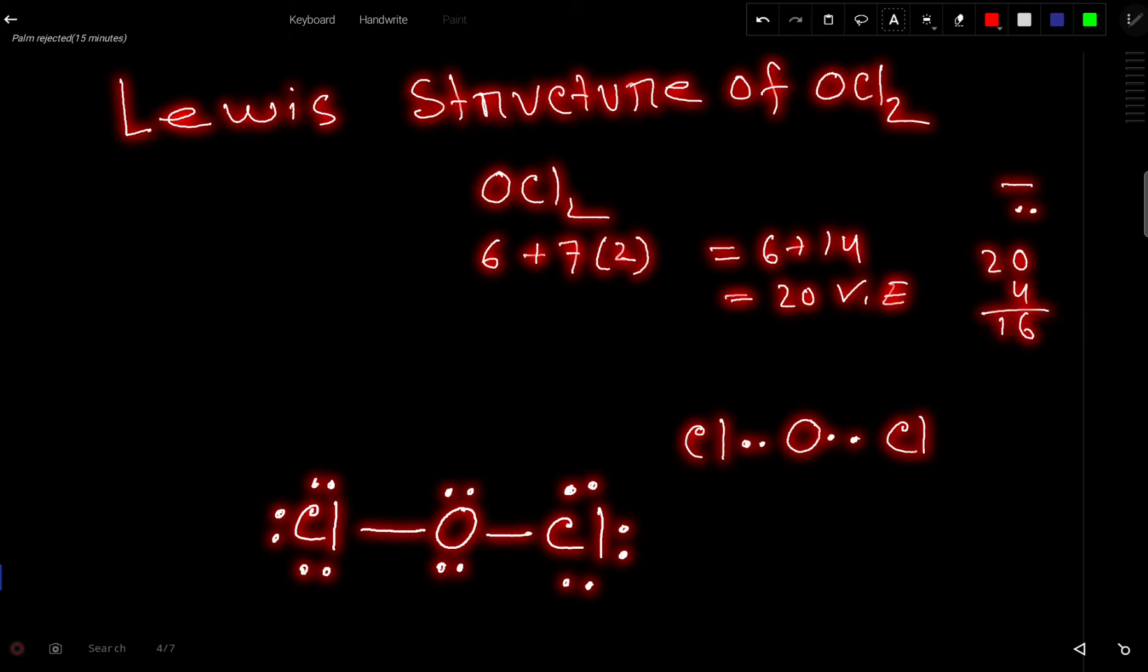These 16 valence electrons will be used to satisfy the octet of outer atoms first. This chlorine has 2. So it will take maximum 6 to complete its octet. So now look we have here 10 valence electrons. This chlorine has 2 so it will take maximum 6.